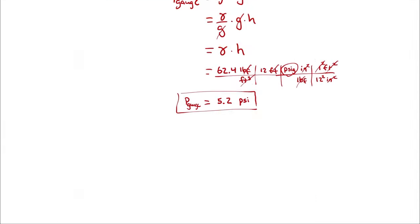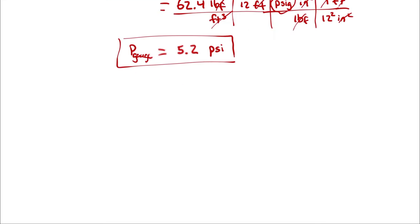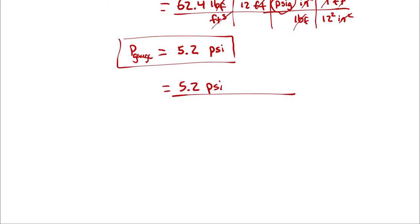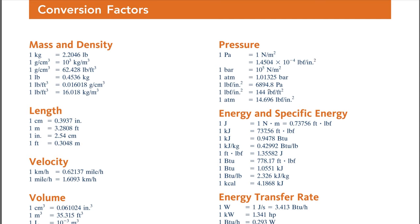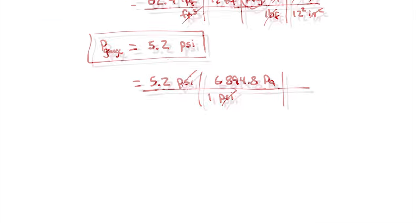I'm going to say 5.2 PSI. And then from the conversion factor sheet, 1 PSI, 1 pound of force per square inch, is equivalent to 6,894.8 Pascals. So PSI cancels PSI and I'm left with just a multiplication.